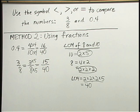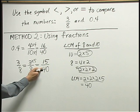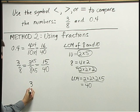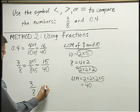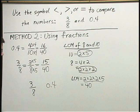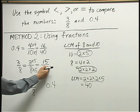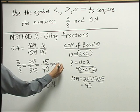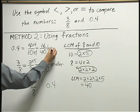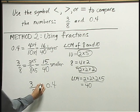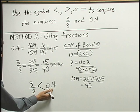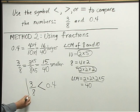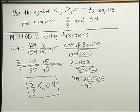Now that I have a common denominator, it's easy to see that 15 fortieths is less than 16 fortieths. So when I want to compare 3 eighths to 0.4, because 15 fortieths is less than 16 fortieths, this is my smaller, this is my larger, and so I can see that 3 eighths is smaller than 0.4. I set up my inequality symbol so the point is next to the 3 eighths, which is the smaller number. This is my larger number.